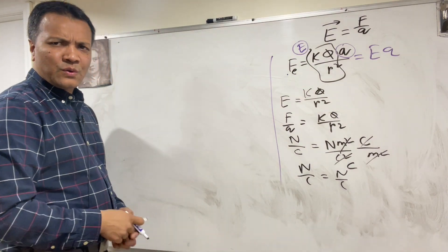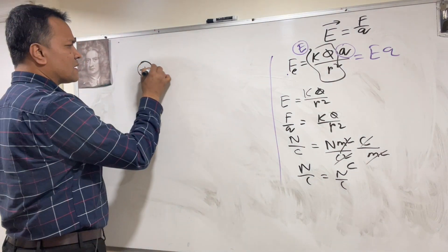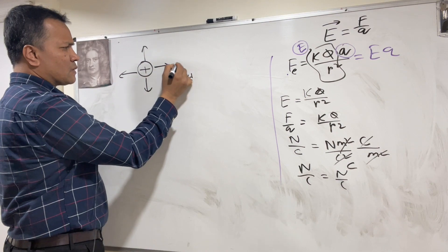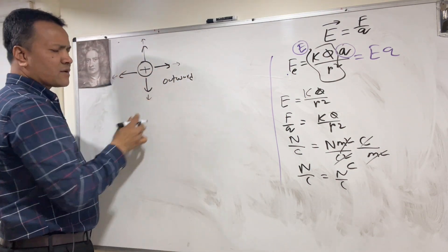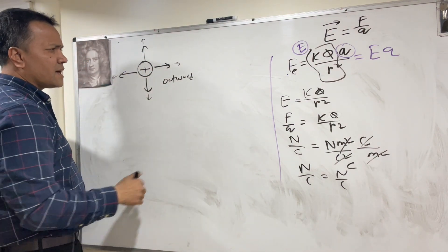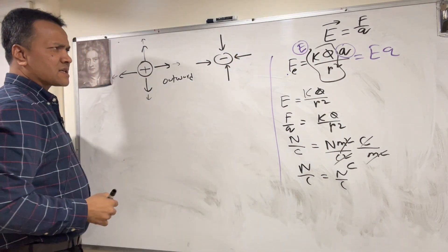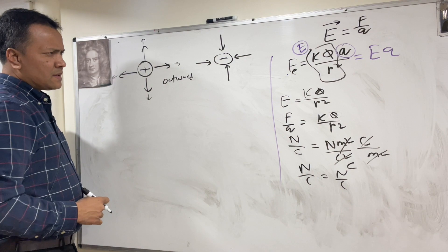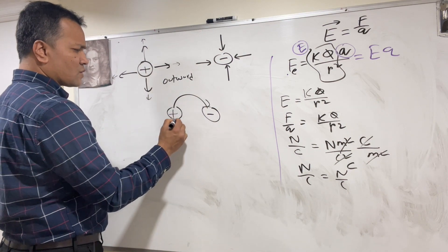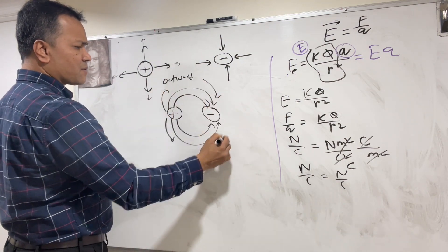If you have a positive charge, the field lines go outward radially, getting smaller and smaller as they go farther from the center. For a negative charge, the field lines go inward radially from all directions. When you have a positive and negative charge together, the field lines go from the positive and end at the negative.